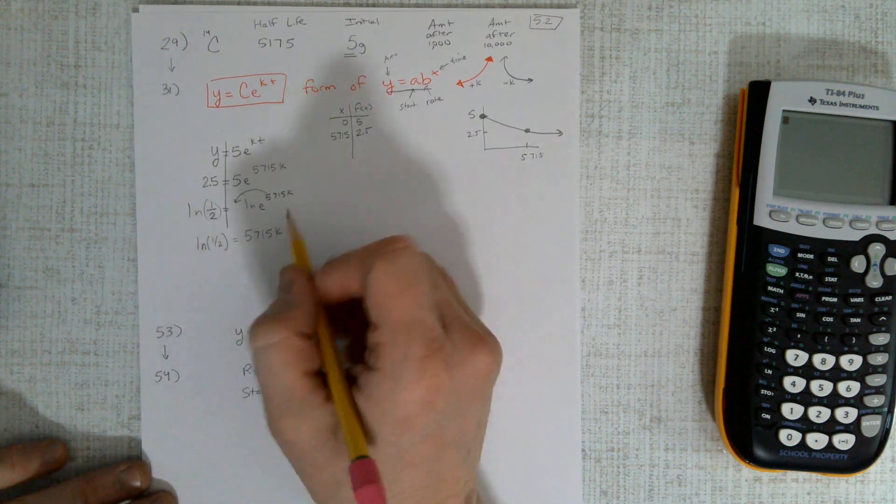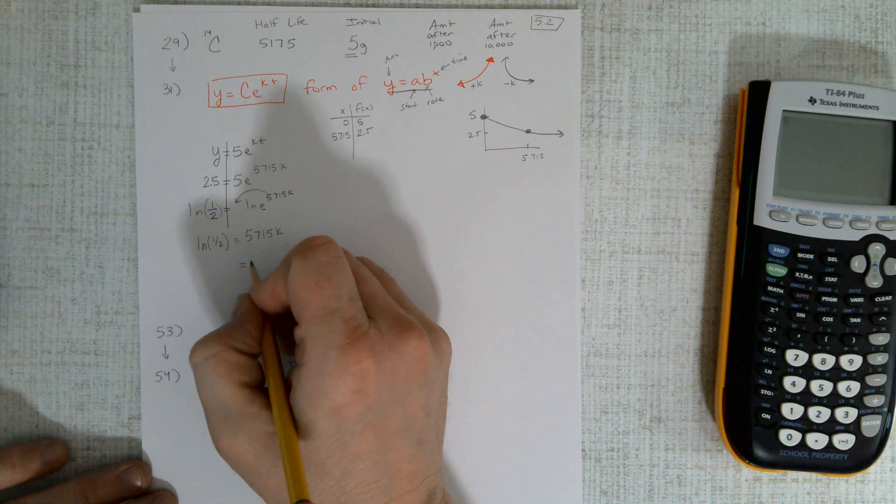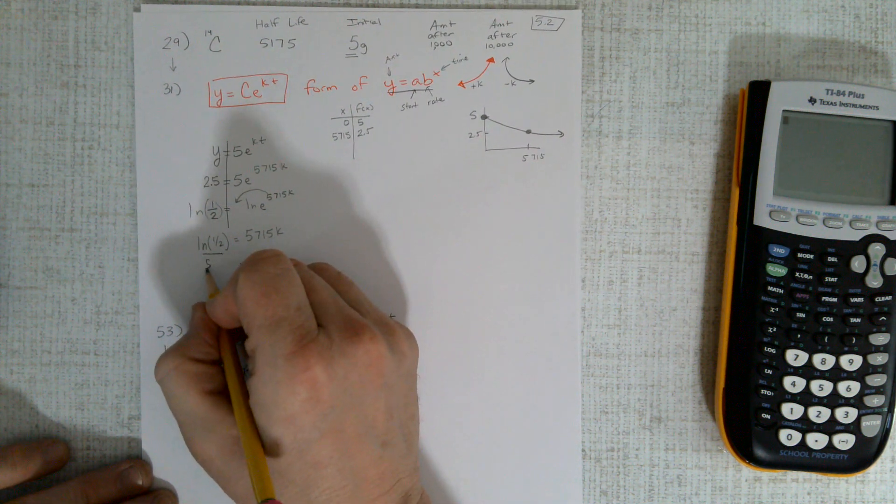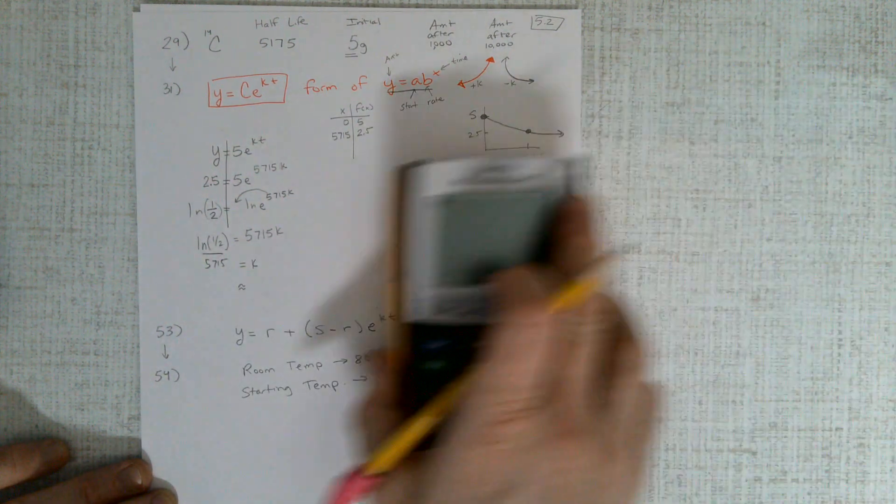On the right-hand side I have 5,715k. Natural log of e is 1, so we just have this divided by 5,715.